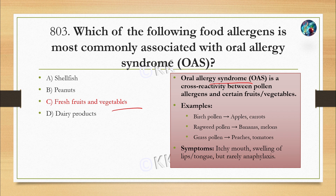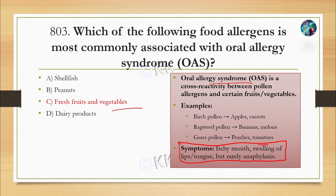For example, birch pollen cross-reactivity causes OAS with apple and carrot. Ragweed pollen cross-reactivity causes OAS with banana and melon. Grass pollen cross-reactivity causes OAS with peach and tomatoes. Symptoms of OAS include itching in the mouth, itchy mouth, swelling of lips and tongue, and in rare cases anaphylaxis can also occur.